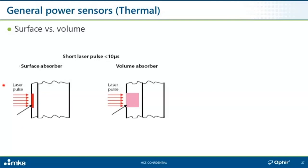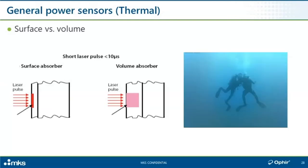A good example of a volume absorber is neutral density absorptive glass. It absorbs light incrementally as the light moves through this partially transparent material, so that even for an extremely short pulse, the heat is distributed through a much thicker layer of material — you don't have one layer that has to contain all of this heat. If you want an image of light being absorbed incrementally as it moves through material — like light coming down through water at 12 meters depth, being incrementally absorbed — that's exactly the principle. Some of our sensors are based on surface absorbers and some on volume absorbers. Volume absorbers are really good for very short pulses with high energy density, but they're not very good for high average powers. There are always trade-offs; the sensor finder will do most of the thinking for you.